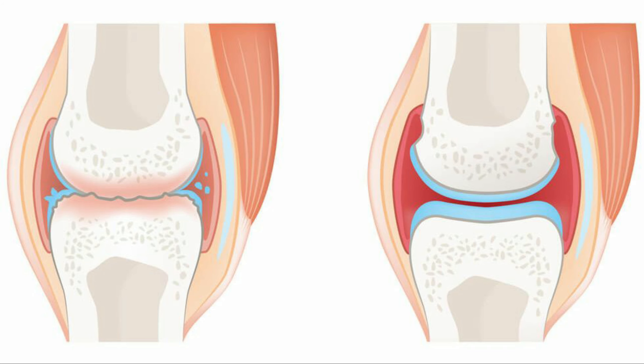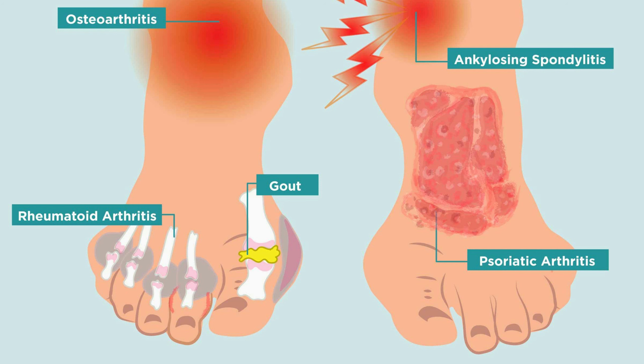Arthritis is the breakdown of tissue inside the joints. It can cause pain, inflammation, restricted movement of the area, and an apparent weakness within the joints affected. There are two main types of arthritis: osteoarthritis and rheumatoid arthritis.